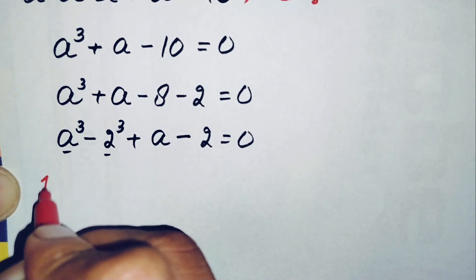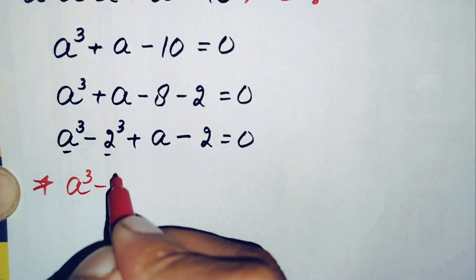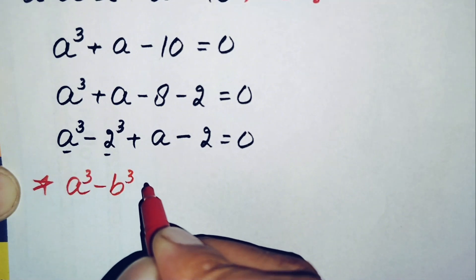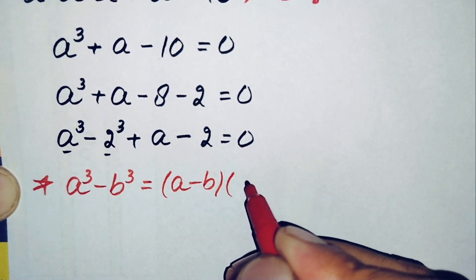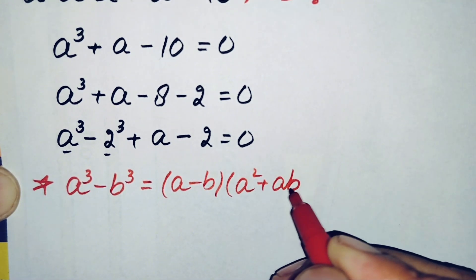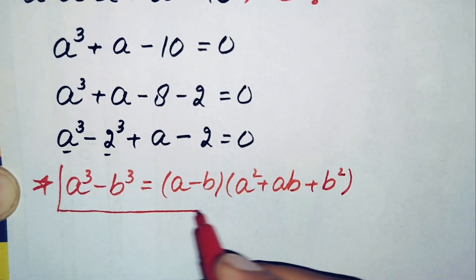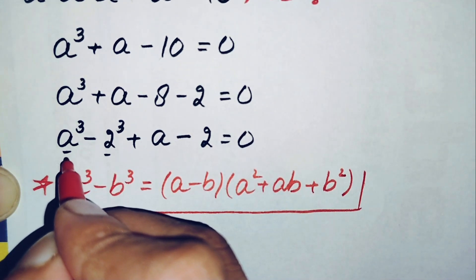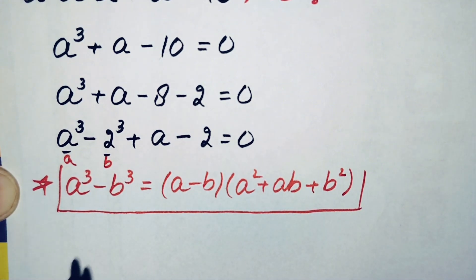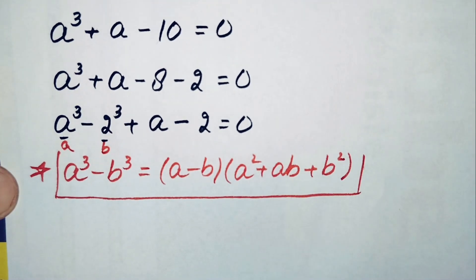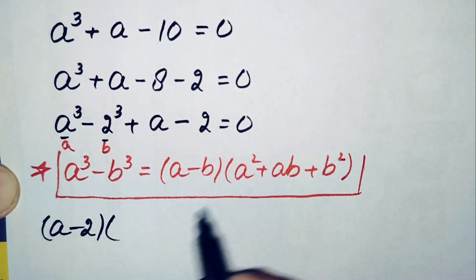So we will use this cubic identity: a cube minus b cube is equal to a minus b times a square plus a times b plus b square. By using this cubic identity here, a is a and b is 2. So this equation will become a minus 2 times a square.